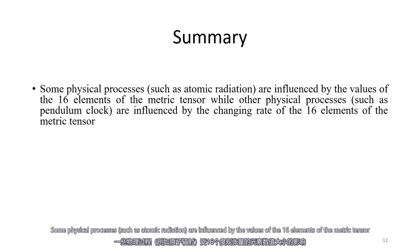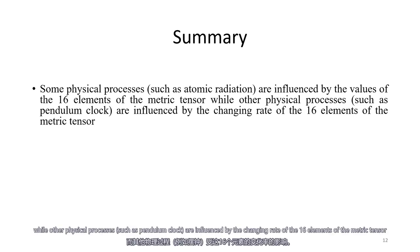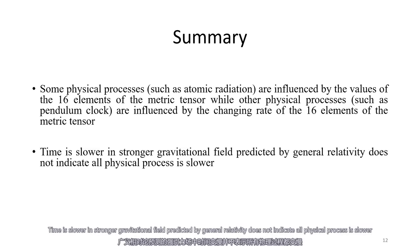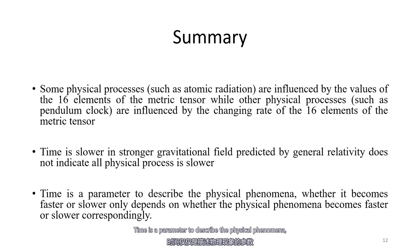In summary, some physical processes are influenced by the values of the 16 elements of the metric tensor, while other physical processes are influenced by the changing rates of the 16 elements of the metric tensor. The statement that time is slower in a stronger gravitational field, as predicted by general relativity, does not indicate how every physical process becomes slower. Time is a parameter to describe physical phenomena. Whether it becomes faster or slower depends only on whether the physical phenomena become faster or slower correspondingly. Thank you.